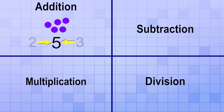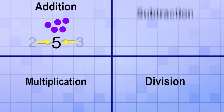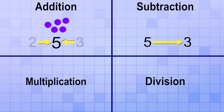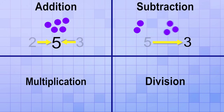The subtraction operation tells us to take one number away from another number. In other words, if we start with an amount, like 5, and we subtract or take away the amount 3 from it, we have only 2 left over.